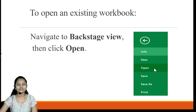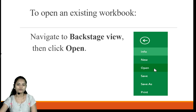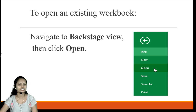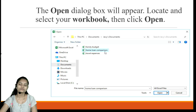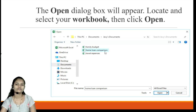To open an existing workbook that we have already created, we go to the backstage view. We can choose the Home tab from the ribbon and then click the Open option. Then we select the computer and click Browse, or alternatively use the drive if our file is uploaded there. We select the location where the workbook is stored and click OK to open it.